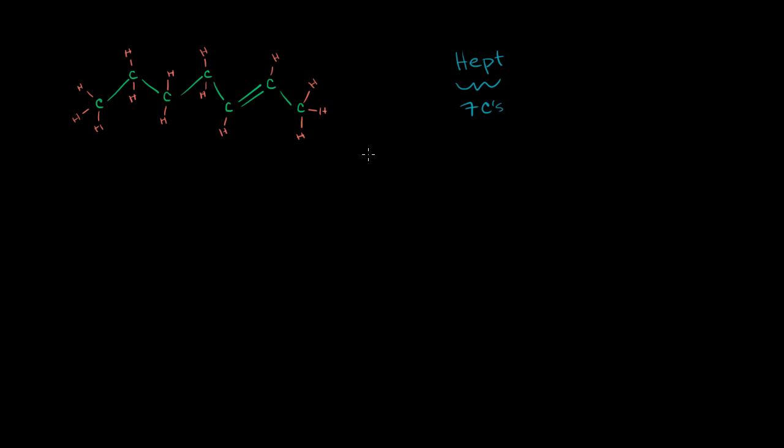But it's not going to be a heptane. Heptane would mean that we have all single bonds. Here we have a double bond. So this is going to be an alkene. So this tells us right here that we're dealing with an alkene, not an alkane. If you have a double bond, it's an alkene. Triple bond, alkyne. We'll talk about that in future videos. So this is hept, and we'll put an ene here.